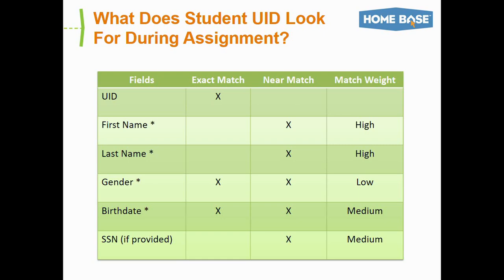What does the student UID system look for when assigning an ID? During an exact match, if the input record contains a UID already in the database, it treats that as an exact match and the master record is updated. If the input record has the same gender and birth date as an existing student UID, it also treats that as an exact match. In near match instances, UID uses first name, last name, gender, birth date, and social security number if provided to develop near match scores. You can see the weights assigned to each criterion for near matching on the right. Note that first name, last name, gender, and birth date are minimum requirements when enrolling a student via PowerSchool, as those are the criteria used by UID at a minimum to run through its matching process.